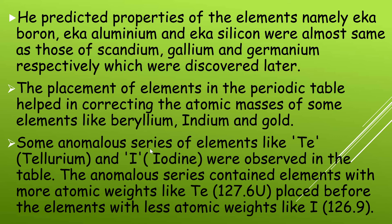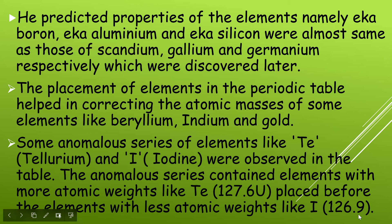Some anomalous series of elements like tellurium and iodine were observed. The atomic weight of tellurium is 127.6 units, yet it was placed before iodine, whose atomic weight is 126.9 units — meaning tellurium's atomic weight is greater than iodine's.